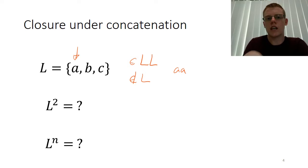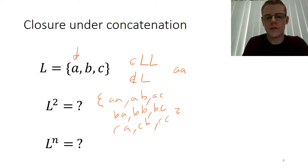So what if we just did L concatenated with L? Maybe we'll add all of the strings in that we need and now the result will be closed. So what is L²? Well, it's going to be AA, AB, AC, BA, BB, BC, and CA, CB, CC. Cool. Okay. So this now contains all of the elements after we've concatenated.